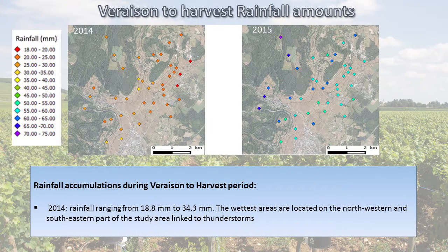Here are the results we have with this rain gauge network. You can see the variation in harvest rainfall amounts. For 2014, the rainfall ranged between 19 to 35 millimeters. The wettest areas were located on the western part of the area and are linked to thunderstorms occurring during the period.